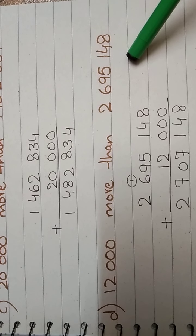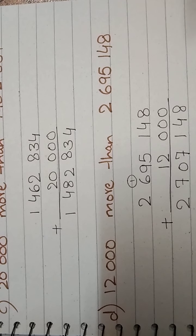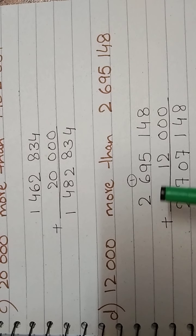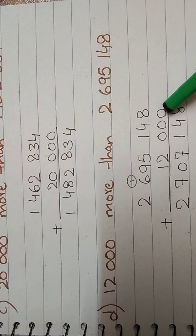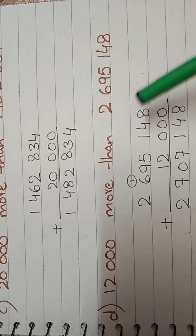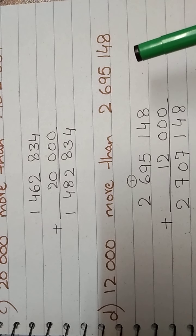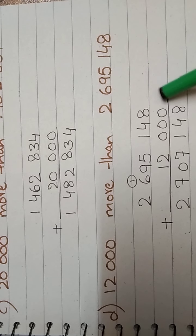In part D, we have 12,000 more than this number. It is a seven-digit number and a five-digit number. We have placed them vertically and added 12,000.